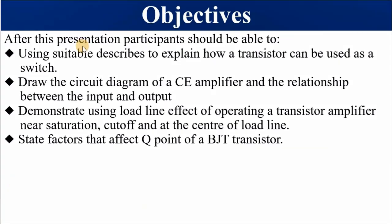By the end of this presentation, you should be able to: number one, describe suitable diagrams to explain how a BJT transistor can be used as a switch. Number two, draw the circuit diagram of a transistor connected in common emitter configuration mode and state the relationship between input and output signals. Number three, demonstrate using a load line the effect of operating a transistor near saturation, near cutoff, and at the center of the load line.